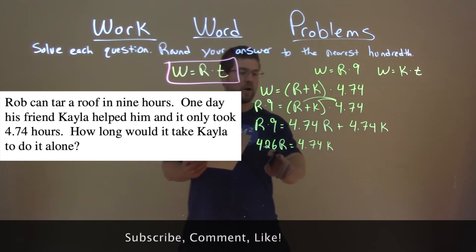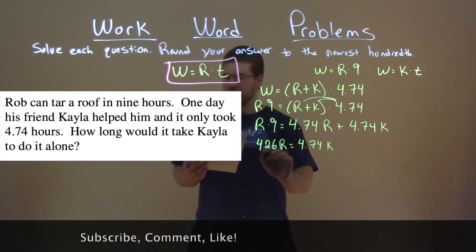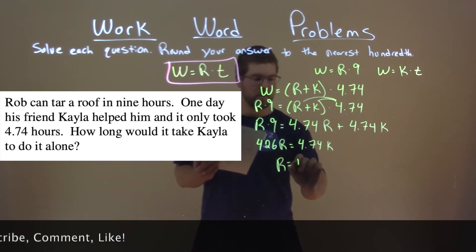Let's get r completely by itself. Divide both sides by 4.26, and r equals 1.11267k.